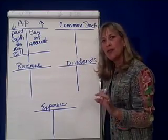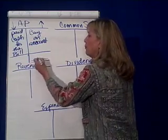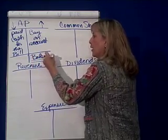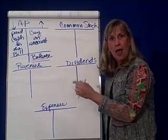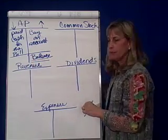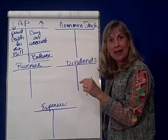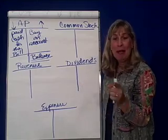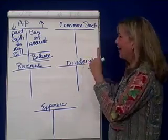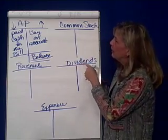So the normal balance that you would expect to see here is a credit balance. Because usually you have more bills outstanding than you've paid. So you would probably never see a debit balance in accounts payable unless you've overpaid your bills. That's liability accounts.